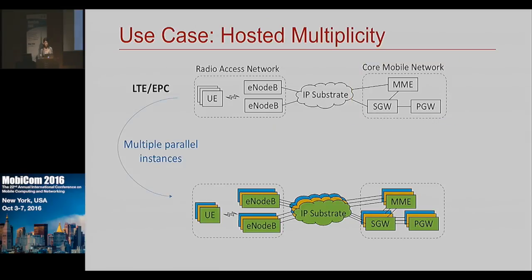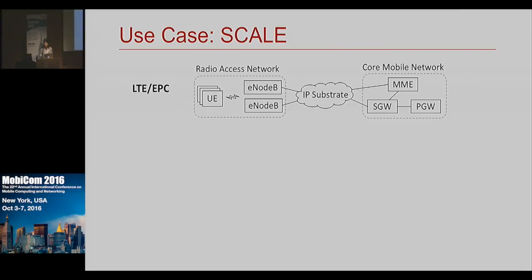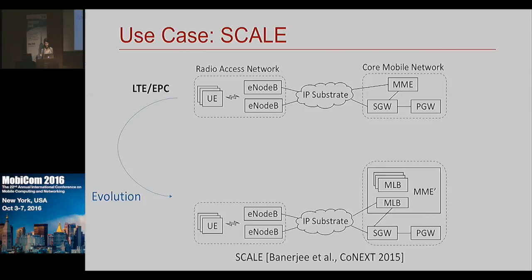The first thing we can do is fundamentally support multiple instances of services — you can create new services and modify existing ones. The next use case is Scale from literature. Scale keeps the original architecture but provides a more elastic replacement implementation for the MME component, with a load balancer. Here we are using replacement as a sort of enabler for evolution.